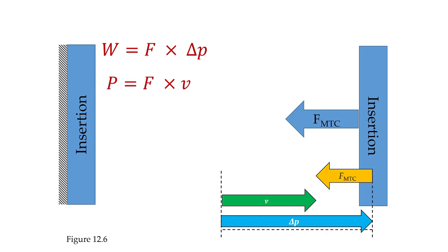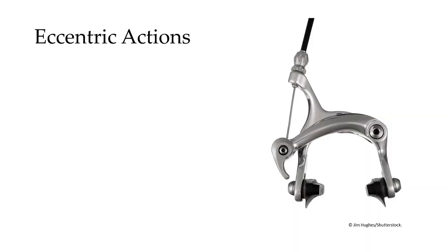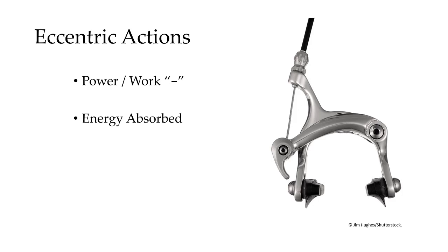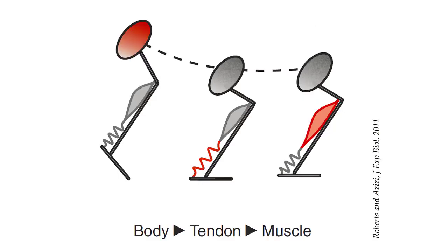These are eccentric actions. With eccentric actions, the work or power is negative, and the MTC is absorbing energy — it is acting like a brake. Where does that energy come from? It comes from the skeletal system. So if we were to trace the flow of energy, kinetic and/or potential energy will leave the skeletal system, go through the tendon, and ultimately be absorbed by the muscle.